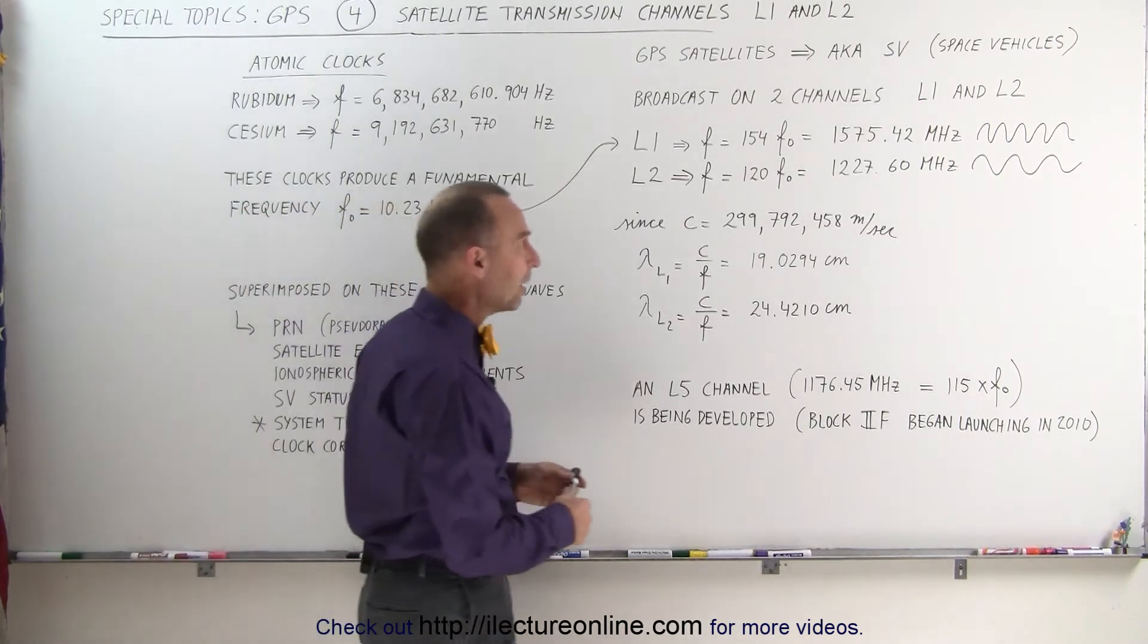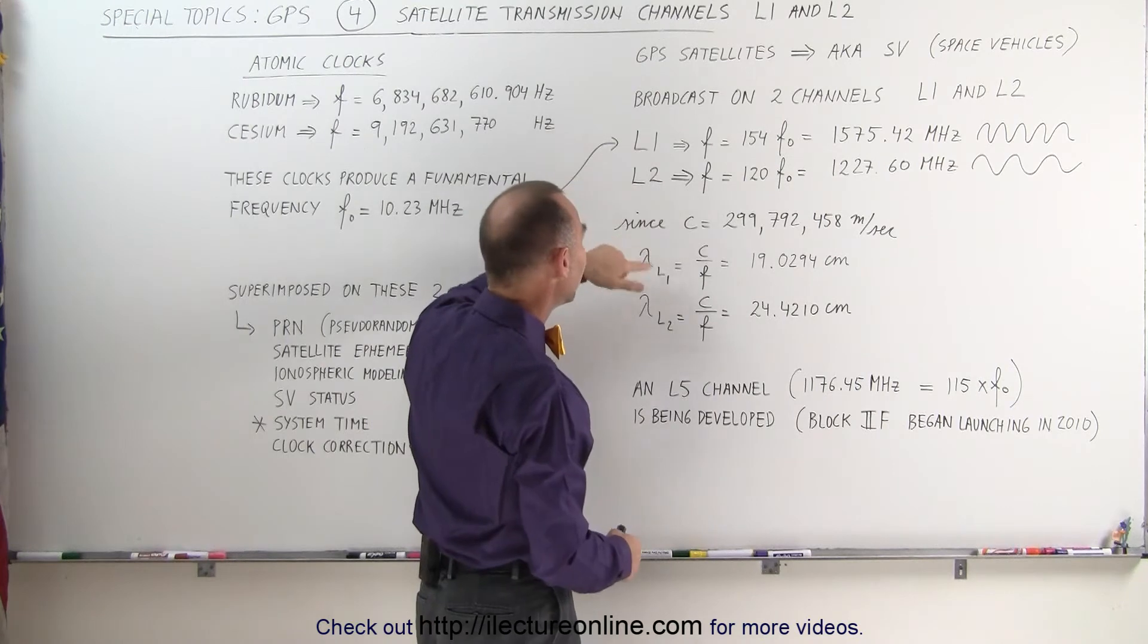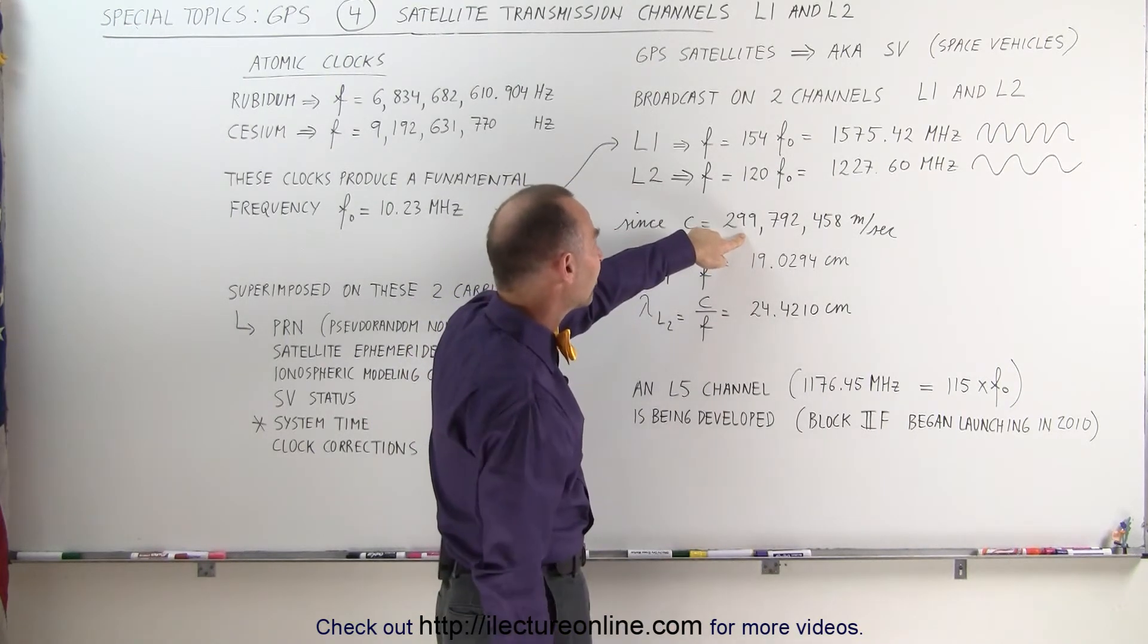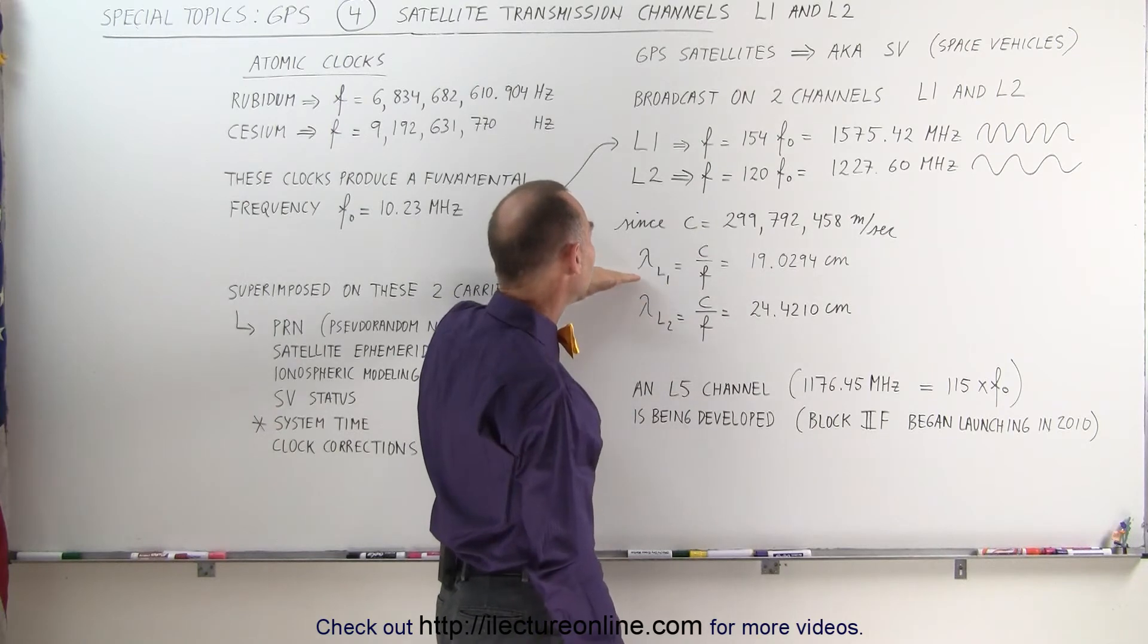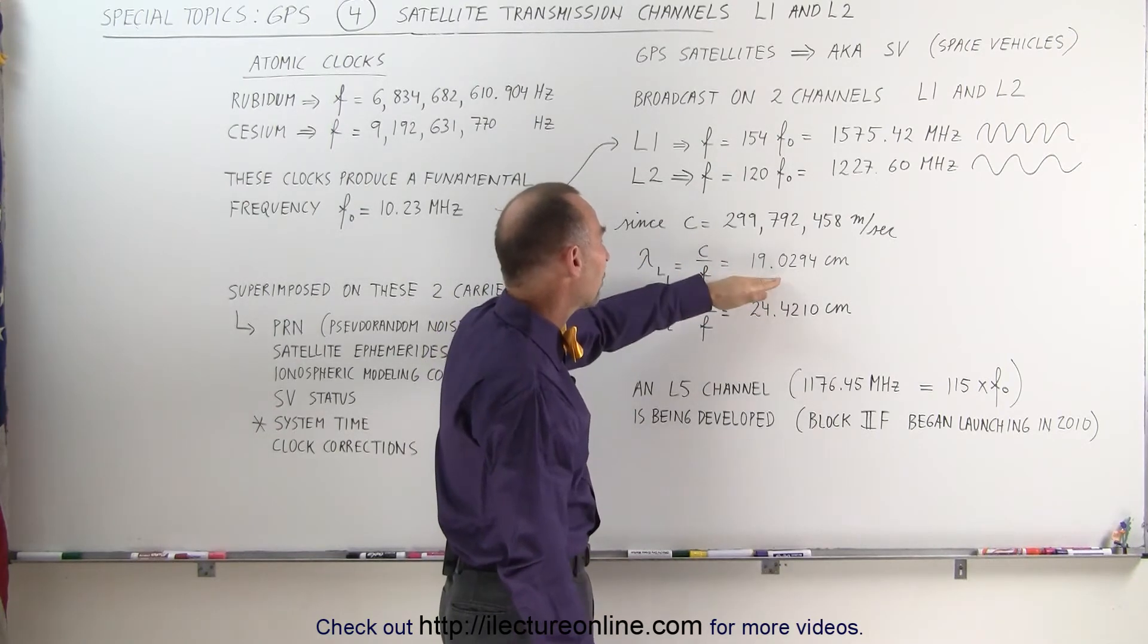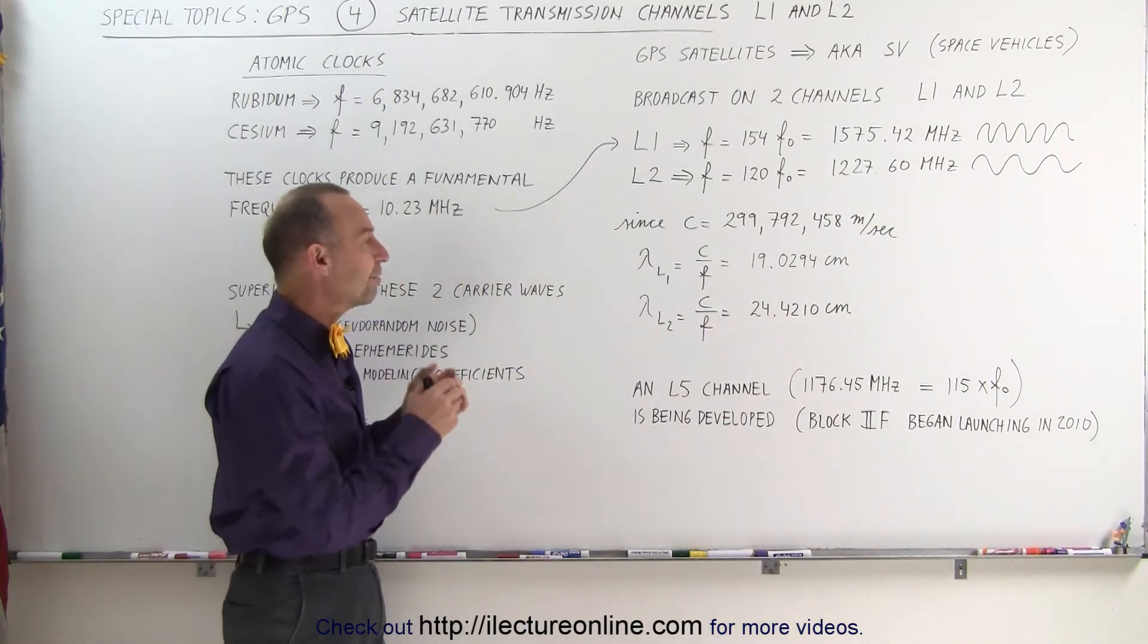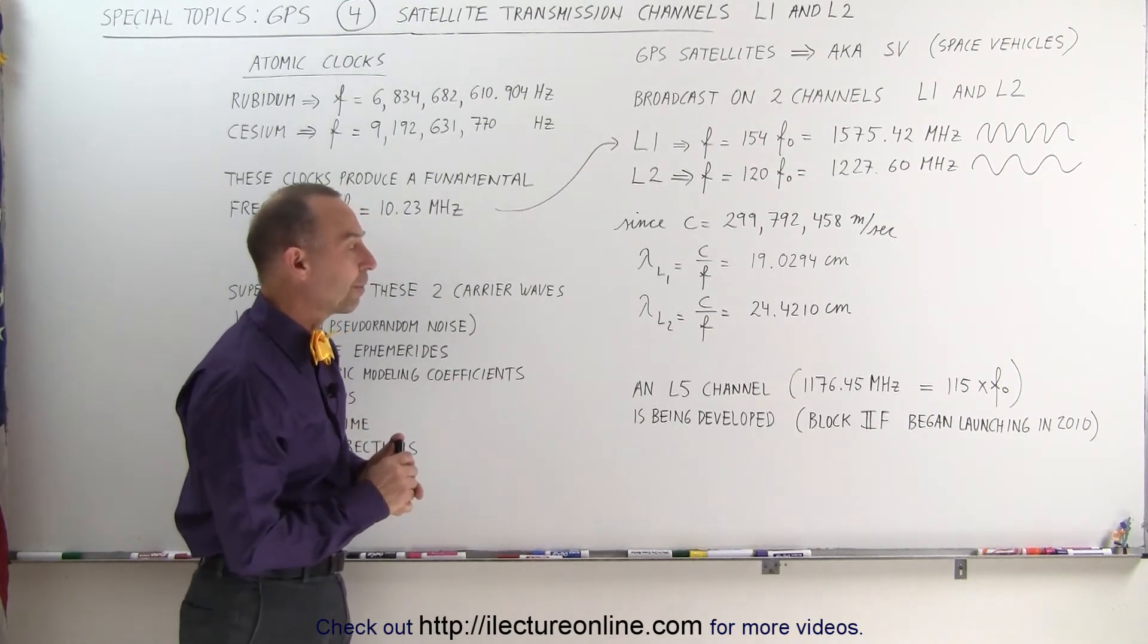What's interesting to think about when you talk about these two carrier waves is that if the speed of light is known at about 3 times 10 to the 8 meters per second, then you can also calculate the wavelengths. These two wavelengths are the two carrier waves at 19 centimeters and 24 centimeters, which puts those in what we call the microwave region of the electromagnetic spectrum.